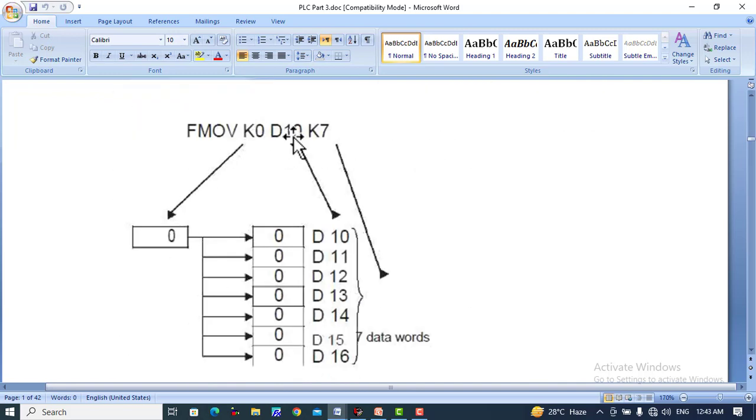This will be moved to D10, D11, 12, 13, 14, 15, and 16 because we are using K7. K7 means seven destinations will be filled with this zero value. This zero value will be transferred to the seven destinations starting from D10, D11, 12, 13, 14, 15, and 16.